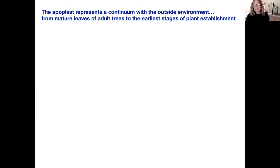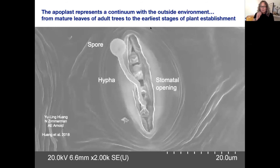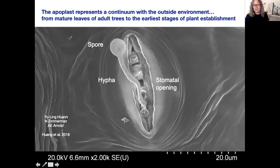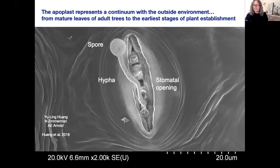So let's go back to the endosphere or the apoplast. This area inside leaves, seeds, and other structures is really interesting ecologically because it represents a continuum with the outside environment. We see this in mature leaves of adult trees and even in the earliest stages of plant establishment. Here we have an electron micrograph — an image taken by Yu Ling Huang, who was a graduate student with me — showing a spore that has germinated on a leaf surface, sent out a hypha, and that hypha is entering the leaf through the stomatal opening.